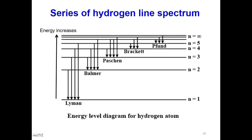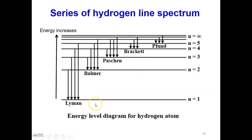Here are the series of hydrogen line spectrum. We have the Lyman series, Balmer series, Paschen series, Brackett series, and also Pfund series. Please note that these 5 series are different from each other based on the final energy level where the electron drops.